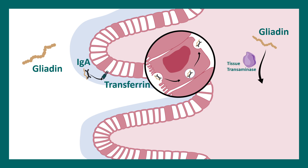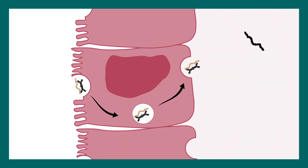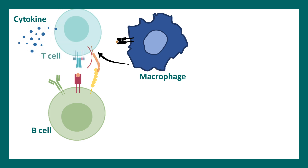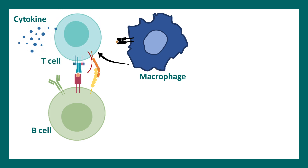Gliadin gets further converted by tissue transglutaminase and it becomes deaminated gliadin. Deaminated gliadin gets engulfed by resident macrophages, which can then present it on top of class 2 MHC molecules. In this case, there is a specific variant of MHC2, which is HLA-DQ8 and HLA-DQ2. The macrophages lead to activation of T cells, which can further secrete inflammatory cytokines, bringing up the inflammation in your intestine.